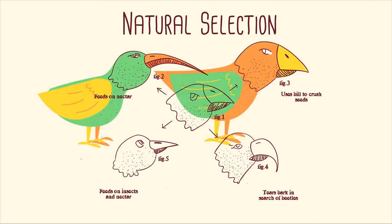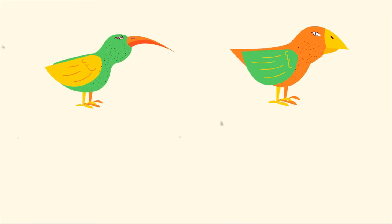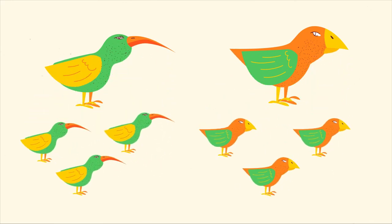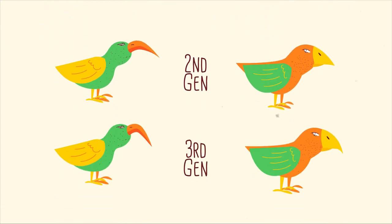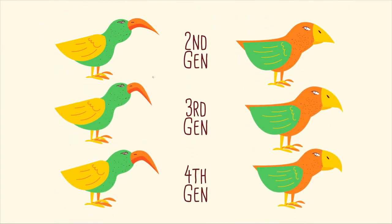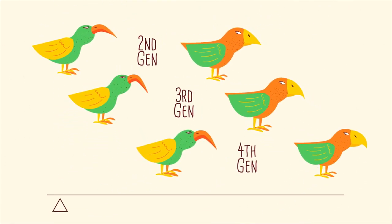By fitness, Darwin meant the ability of an individual to survive and to pass on its characteristics to the next generation. Over time, changes in the characteristics of a species could occur. He also proposed that the changes within a species occurred very slowly through a gradual process.